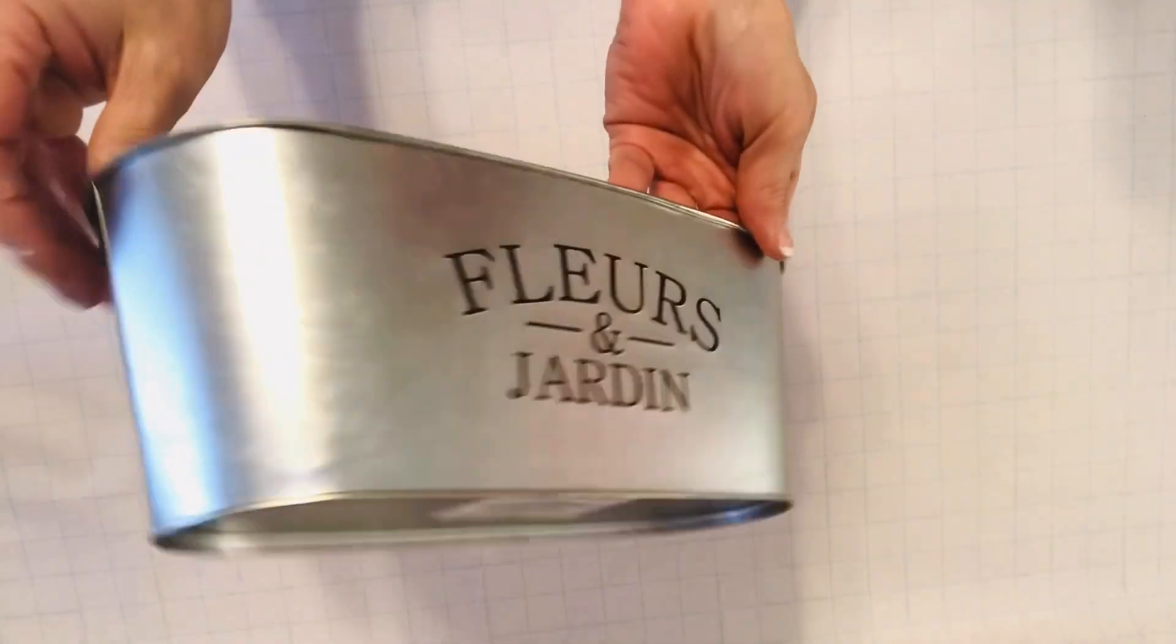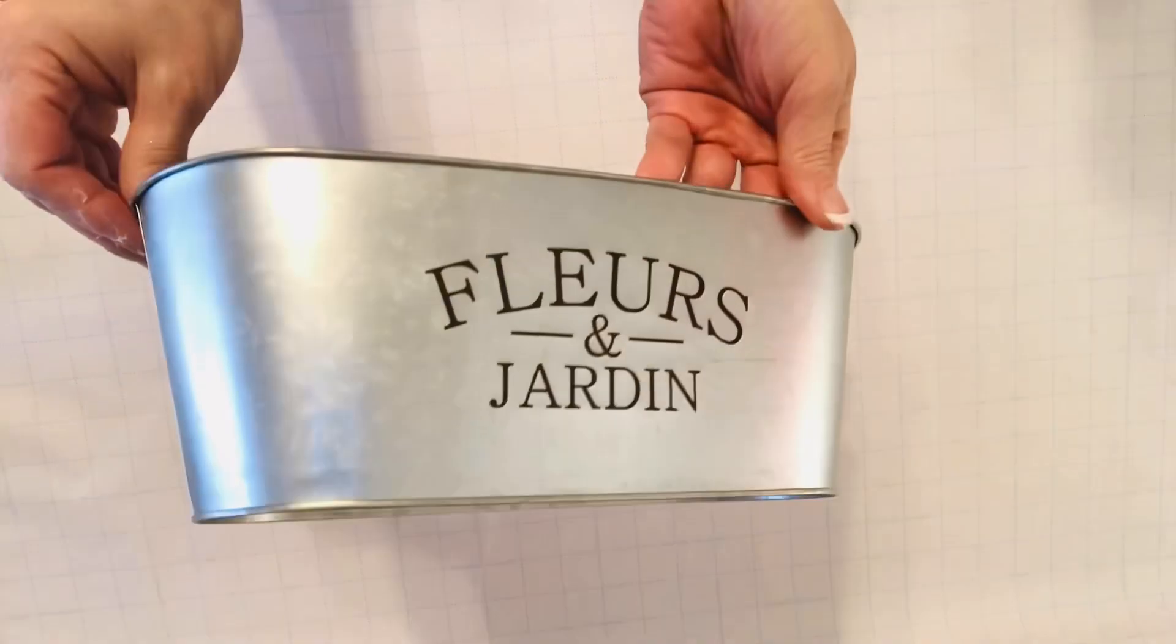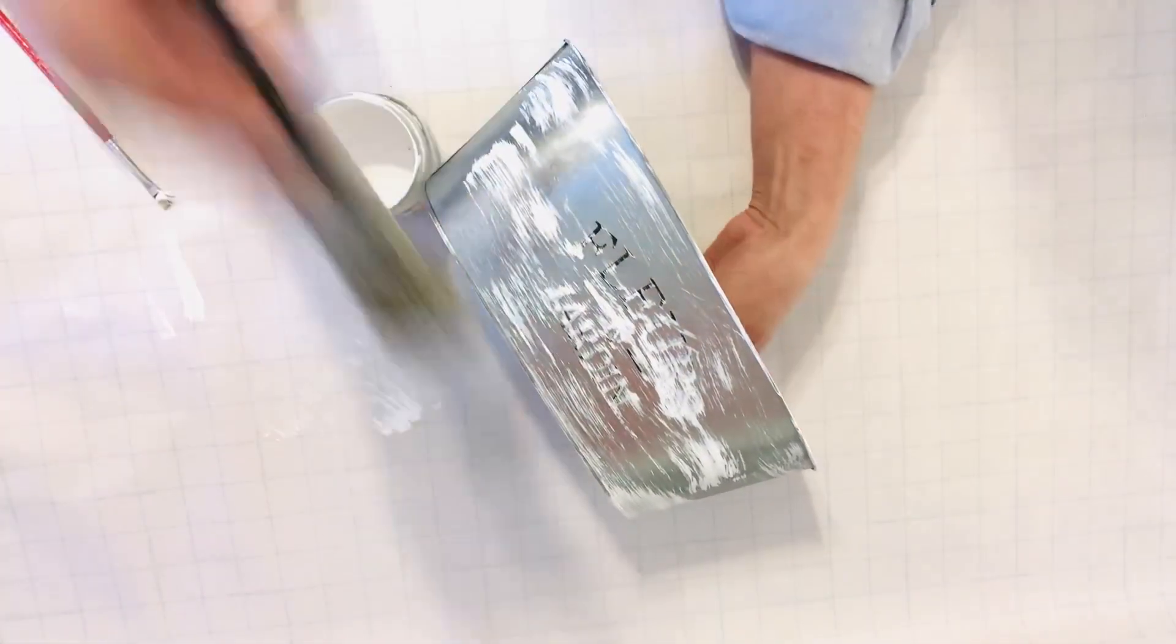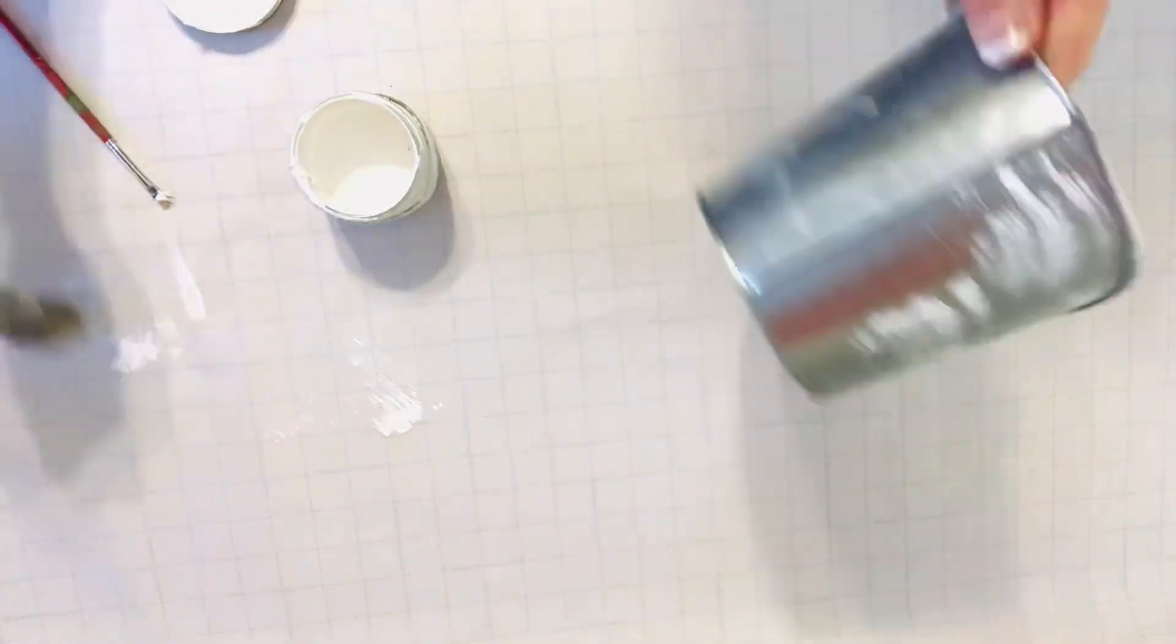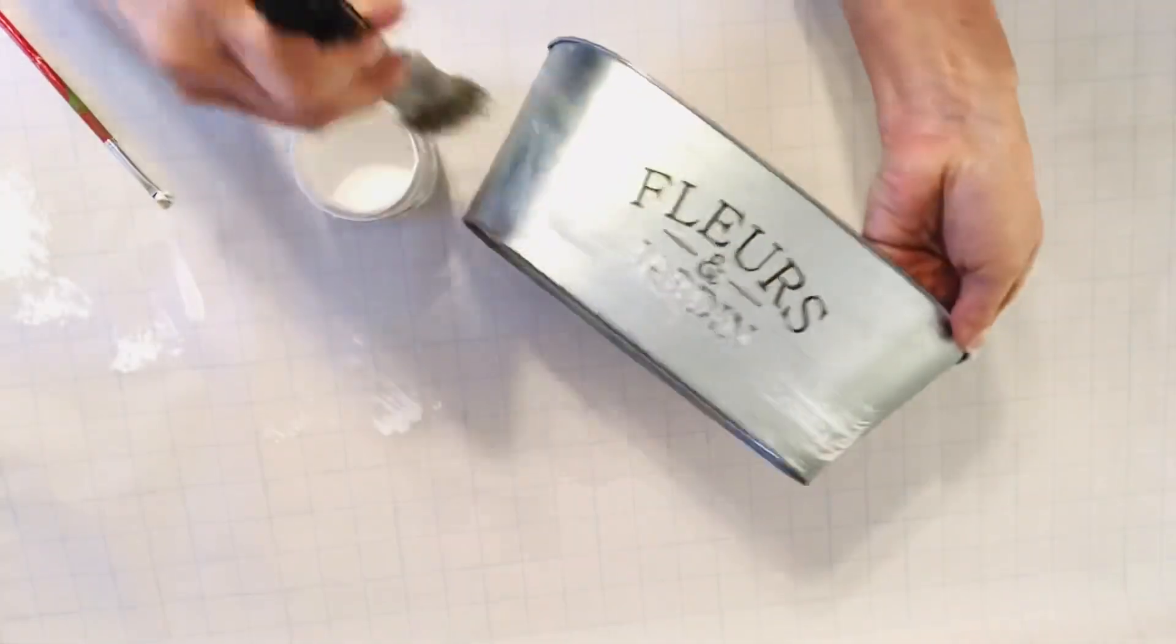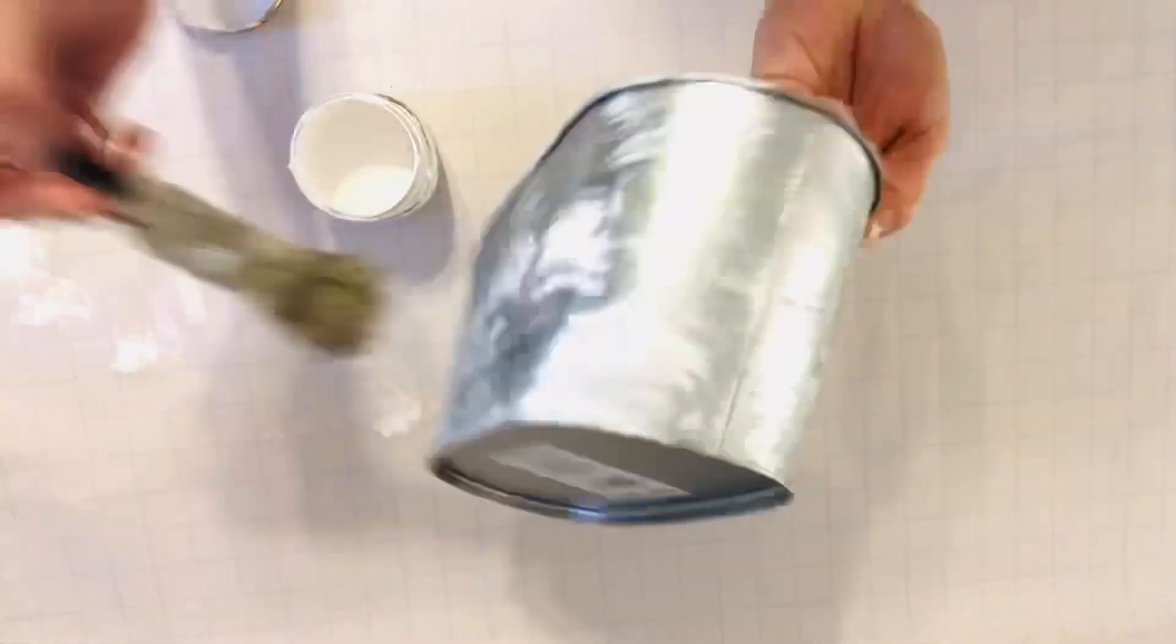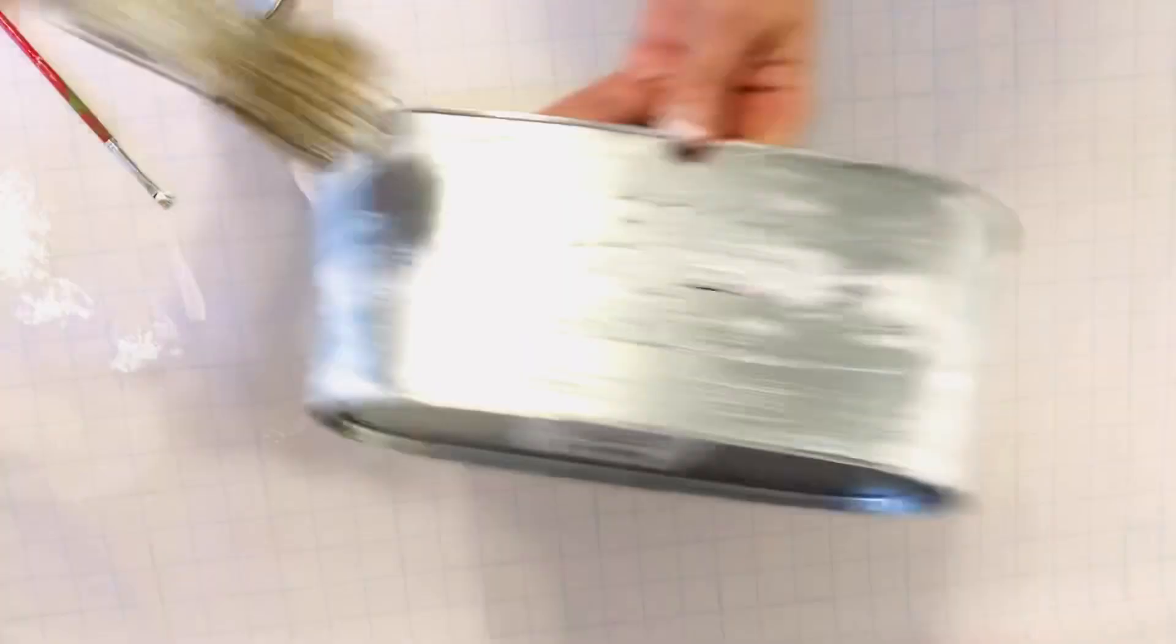Dollar Tree has been carrying these metal flower bins for quite some time. And you can usually find them year round, but especially in the spring. We'll start this project by dry brushing some white chalk paint, or you could also use white flat paint around all sides of the metal tin.